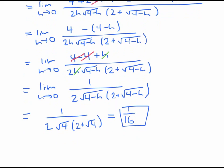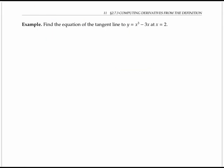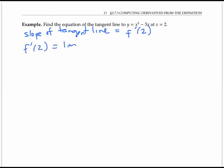The algebra doesn't get much harder than that first problem. In this next example, we're asked to find the equation of the tangent line to y equals x cubed minus three x at x equals two. The slope of the tangent line is given by the derivative f prime of two, so let's calculate the derivative first. f prime of two is the limit as h goes to zero of f of two plus h minus f of two, all over h.